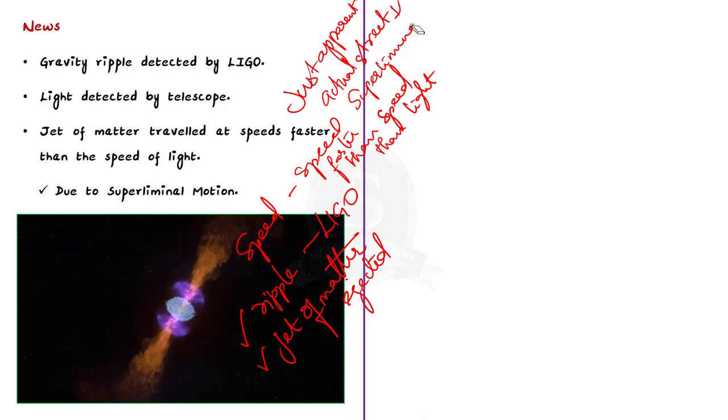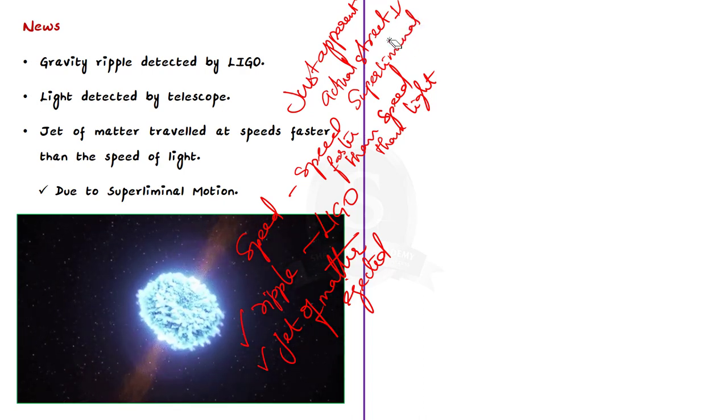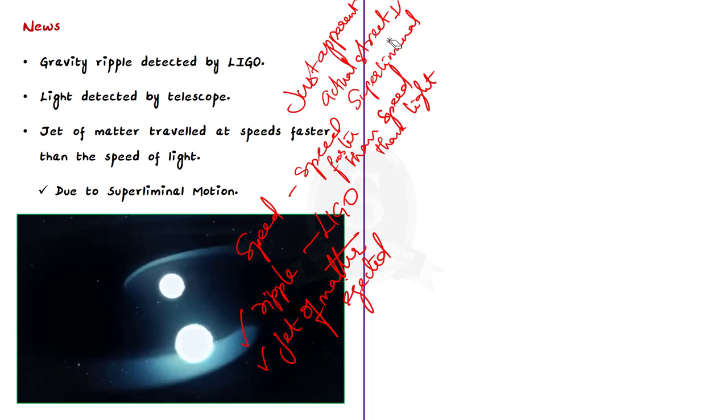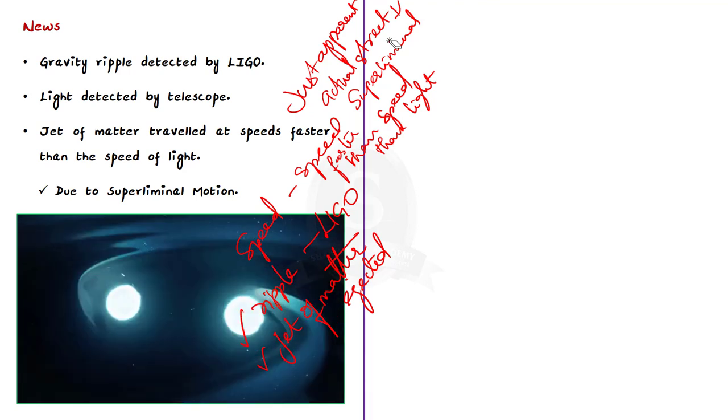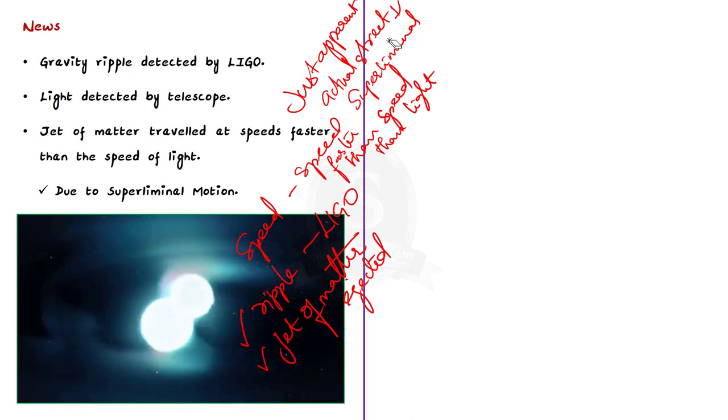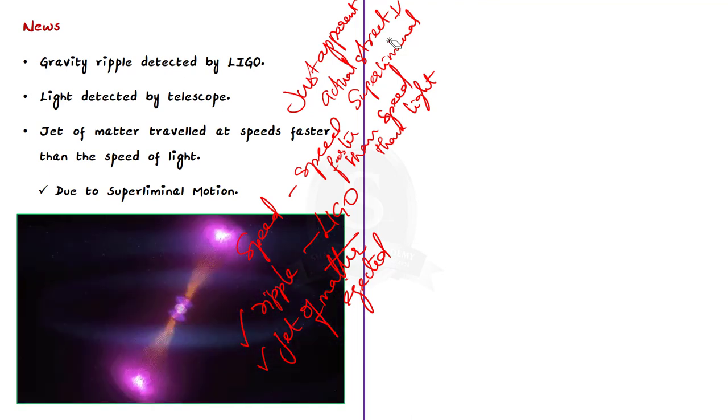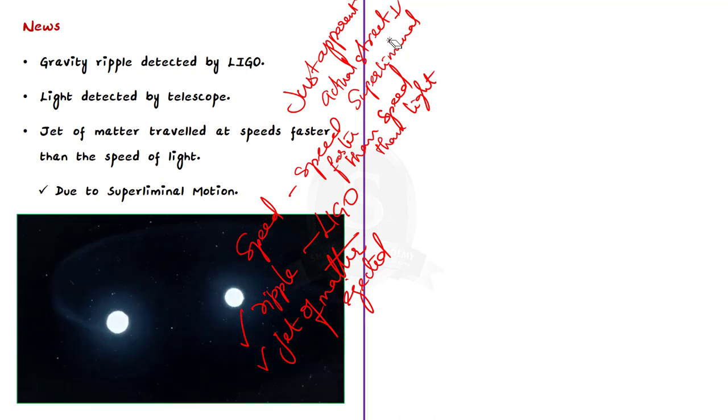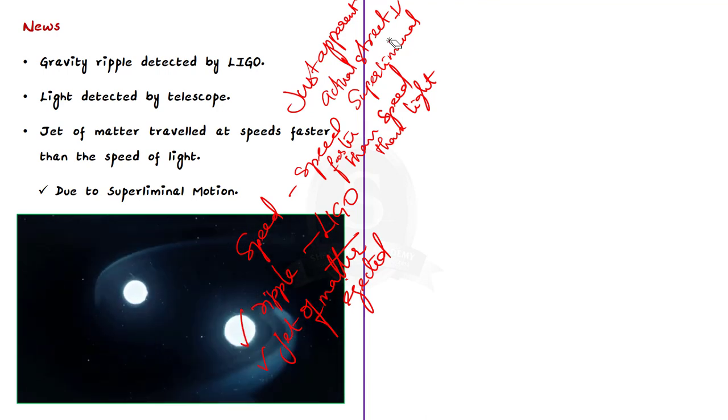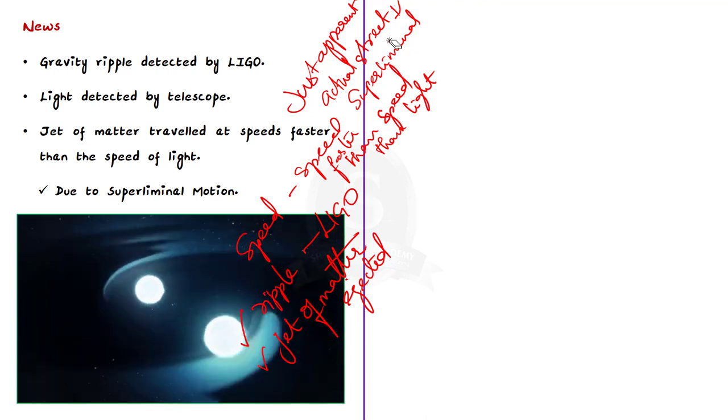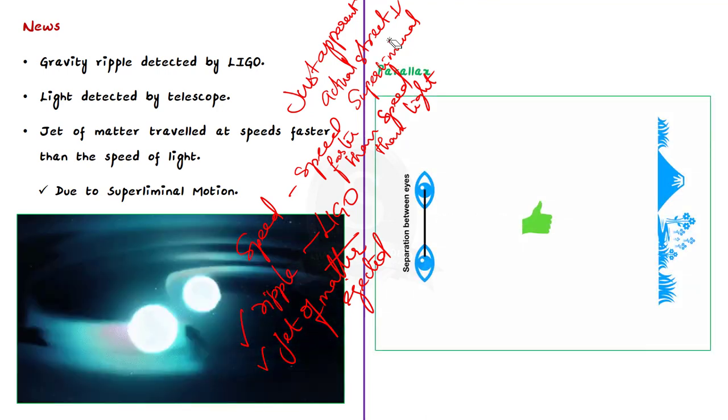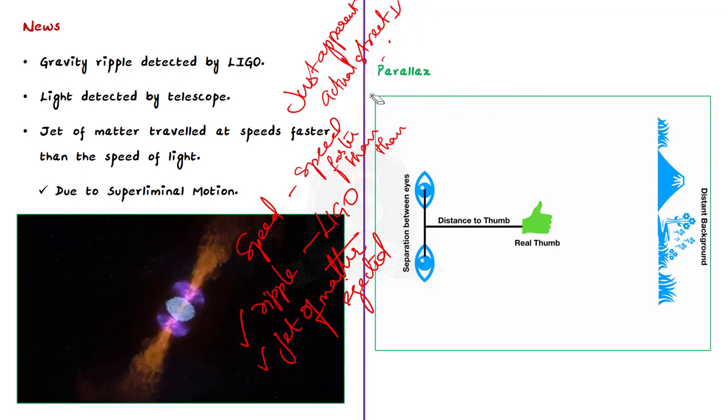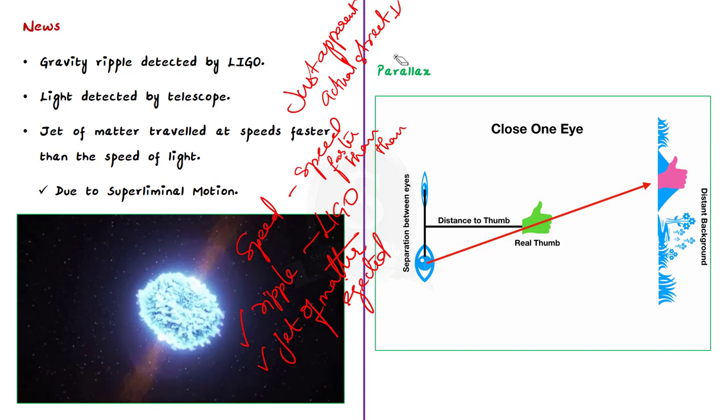Now before explaining what superliminal motion is, I have a question. Have you wondered how astrophysicists measure the distance of stellar objects? When I was a kid, I used to think they must use a light beam and find the time taken for the light beam to go and come back, and then find the distance. But this is not correct, because astrophysicists have measured distances of stellar objects that are millions of light years away from us. So what do they actually use? The answer is parallax.